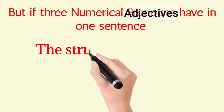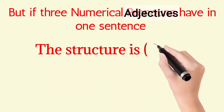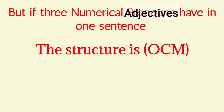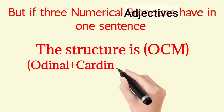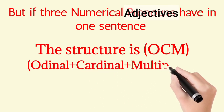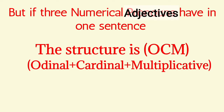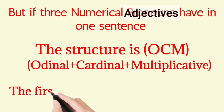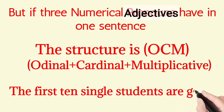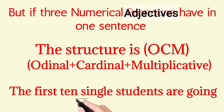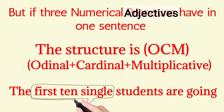If all three types of numerical adjectives appear in one sentence, the structure is OCM — Ordinal plus Cardinal plus Multiplicative. The normal structure is OCM, left to right. For example: the first ten single students are going — first (ordinal), ten (cardinal), single (multiplicative).